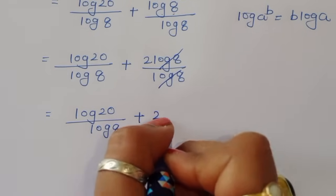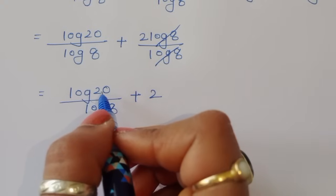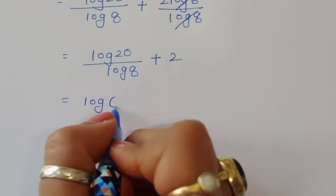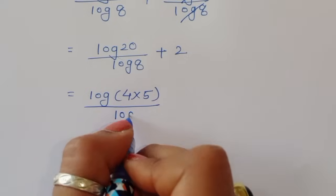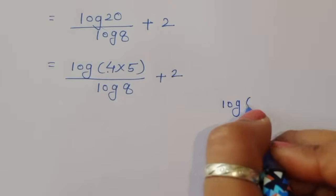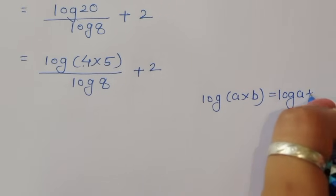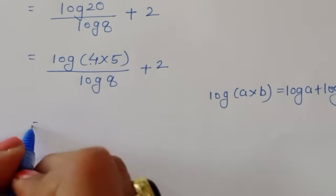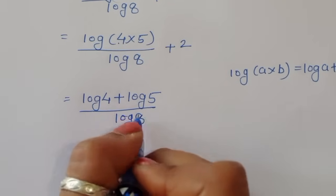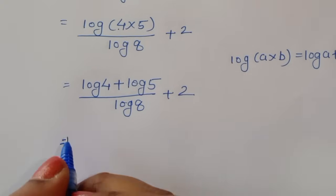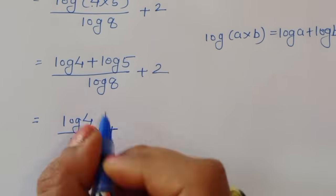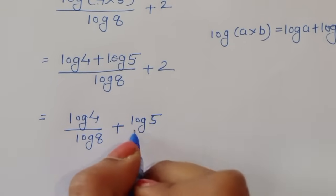So x equals log of 20 divided by log of 8 plus 2. Now we factor 20 as 4 times 5. Using the product rule, log of 4 times 5 becomes log of 4 plus log of 5, so we get log of 4 divided by log of 8, plus log of 5 divided by log of 8, plus 2.